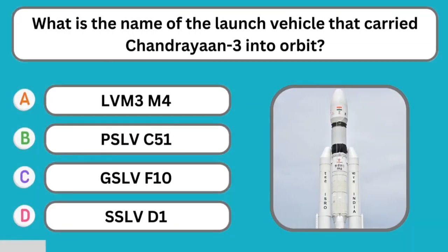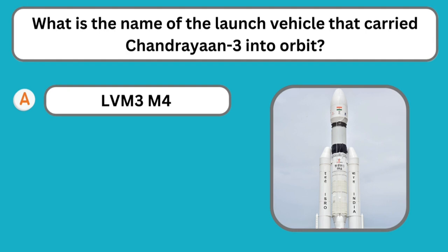Question number three: What is the name of the launch vehicle that carried Chandrayaan 3 into orbit? The correct answer is LVM3 M4.